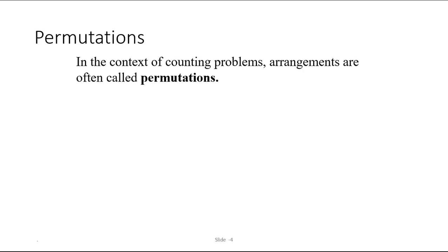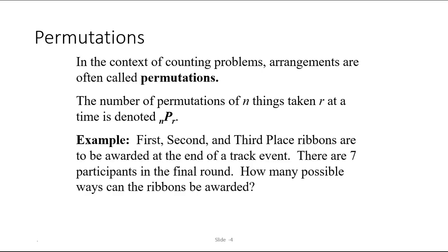Let's start with permutations. In the context of counting problems, arrangement and permutation mean the same thing. The number of permutations of n objects taken r at a time is written nPr, where the n and the r are subscripts. For example, you might have a problem that asks you, first, second, and third place ribbons are to be awarded at the end of a track event.